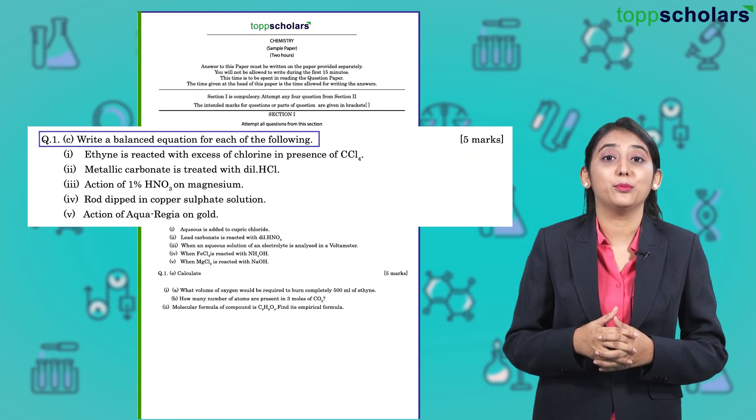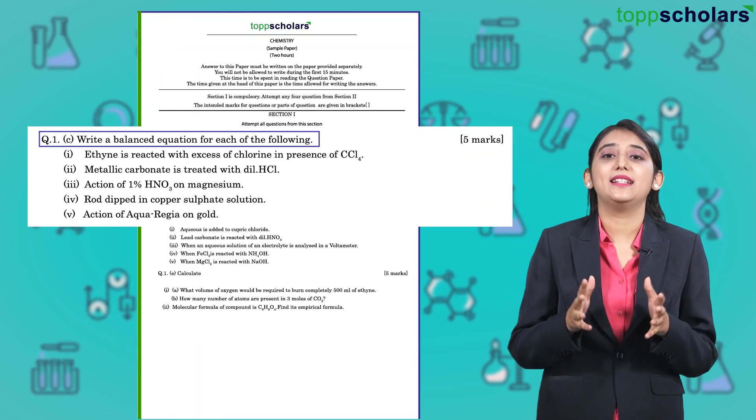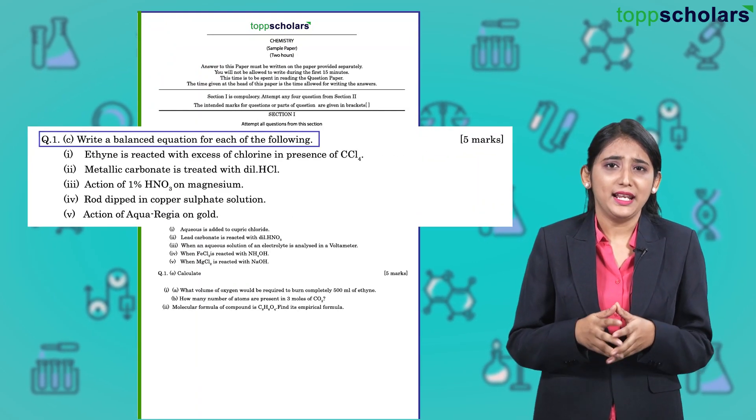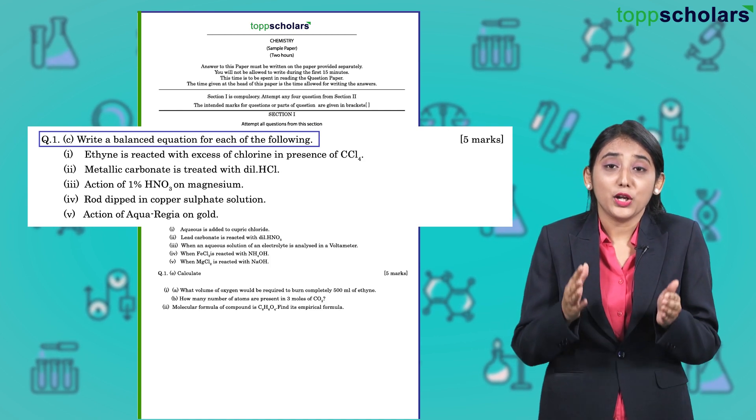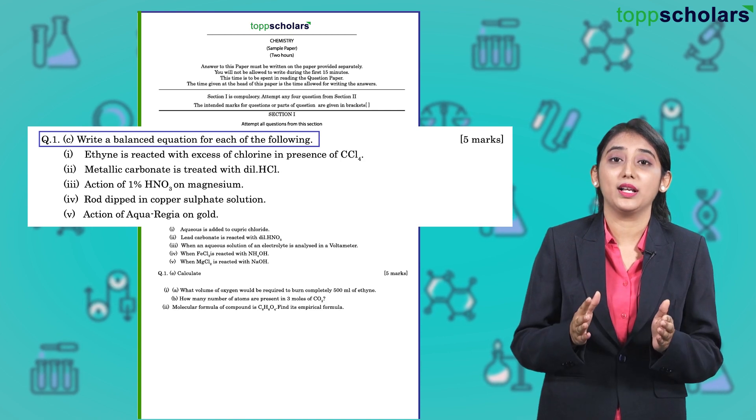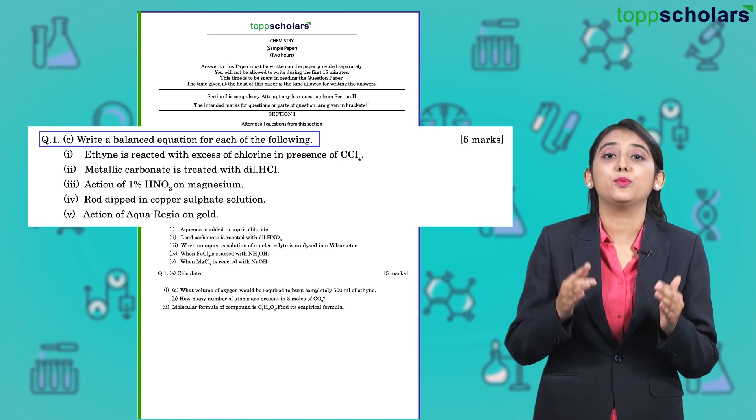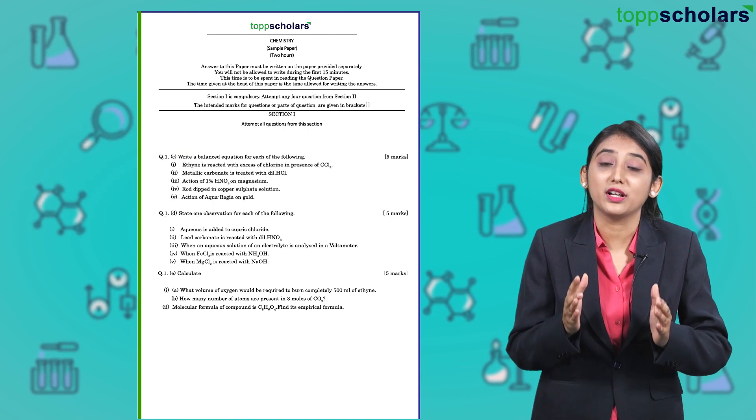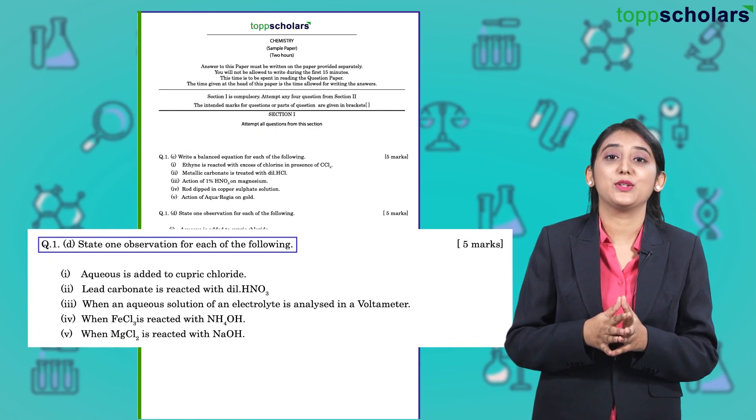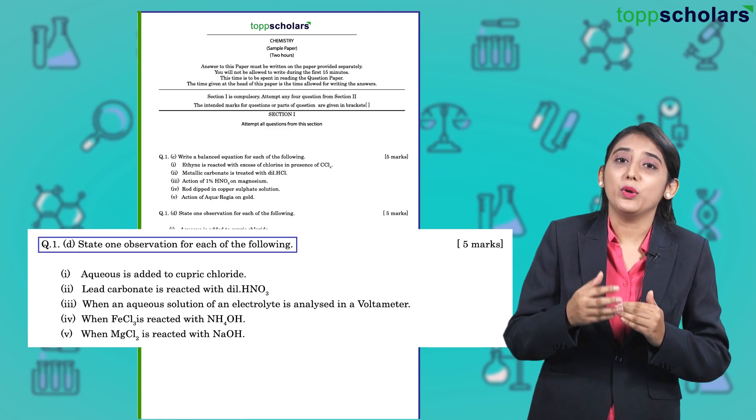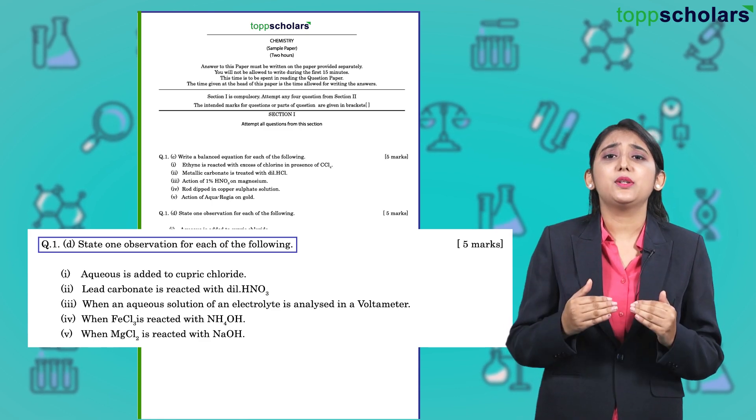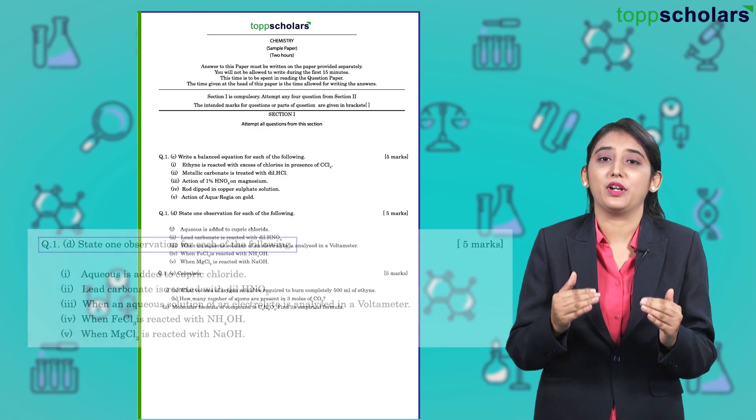Question 1C comprises of write a balanced chemical equation. In this type, you are provided with a word equation and you need to know the chemical formulas as well as how to balance the chemical equation correctly. Question 1D comprises of state one observation. Here again, you are provided with a word equation and you need to state a distinctive product.